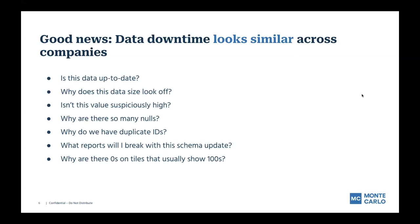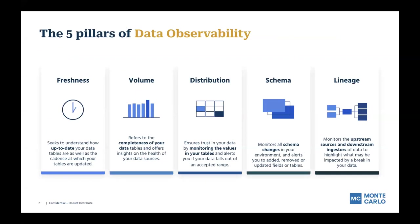We've done some work trying to systematize these types of questions and arrived at a design philosophy we call data observability — an end-to-end holistic approach to data quality. We've broken down our main approaches into five pillars: freshness, volume, distribution, schema, and lineage.